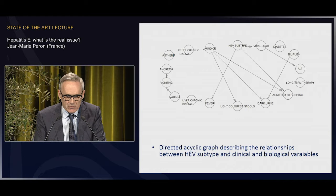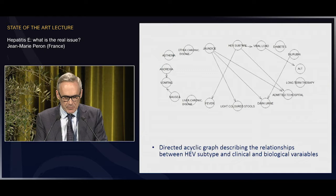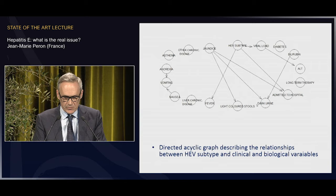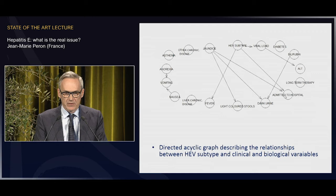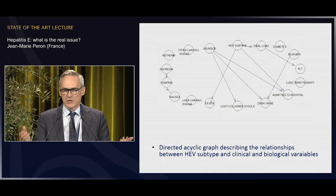A DAG — a directed acyclic graph statistical analysis — shows relationships between subtype and clinical and biological variables. There's a relationship between HEV subtype and viral load, and between viral load and ALT enzymes. There's also a direct relationship between HEV subtype and hospitalization and fever. So there is probably more severity with genotype 3F.